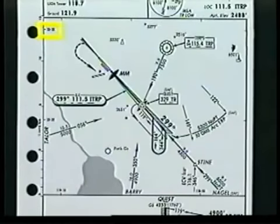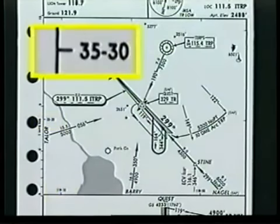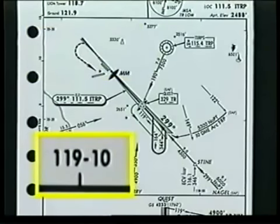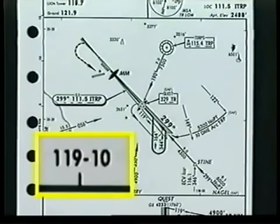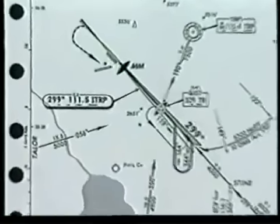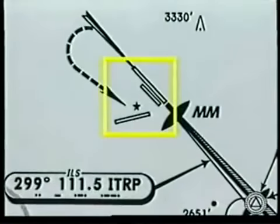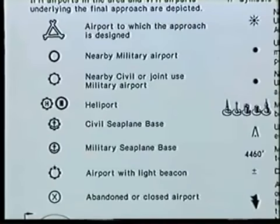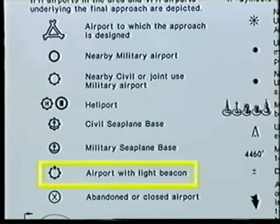Latitude and longitude lines are shown in 10-minute increments along the inside edges of the plan view. In this case, 35-30 represents 35 degrees, 30 minutes north latitude, and 119-10 represents 119 degrees, 10 minutes west longitude. The primary airport is depicted with its corresponding runway layout. Other airports in the vicinity are shown screened for reference. These include airports with an instrument approach and others which underlie the final approach course. A star symbol represents a lighted beacon.